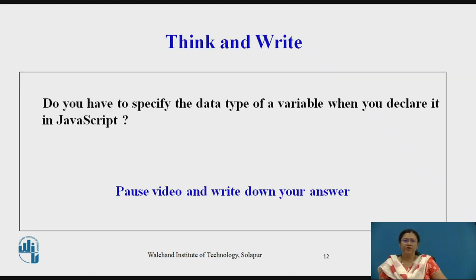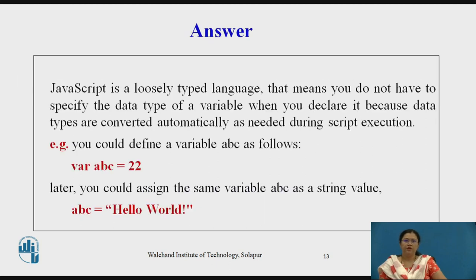Pause the video and write down your answer. Do you have to specify the data type of a variable when you declare it in JavaScript? The answer is: JavaScript is a loosely typed language, so you do not have to specify the data type of a variable when you declare it, because data types are converted automatically as needed during script execution.